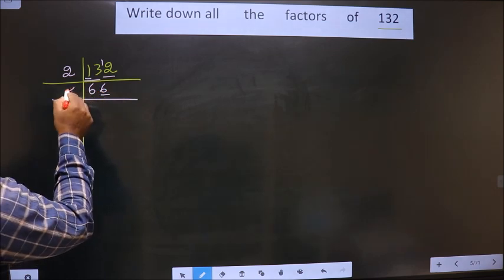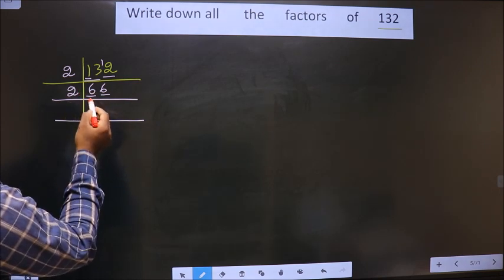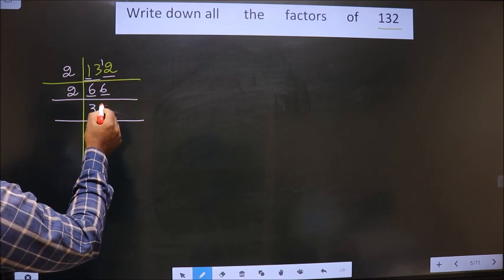Here the last digit is 6 which is even, so we take 2 here. First number is 6. When do we get 6 in the 2 table? 2 times 3 is 6. Next number is 6, so 2 times 3 is 6.